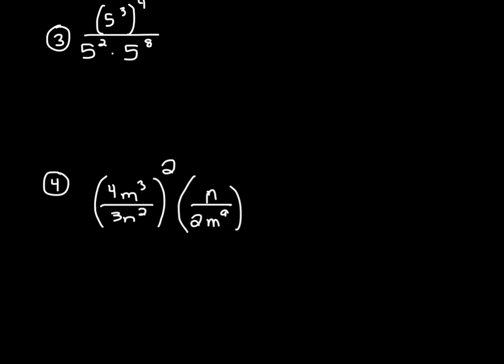In number three, our base is a number instead of a variable, but you treat it the same way. In the numerator, we have a power raised to another power, so we multiply: three times four is twelve, giving a base of 5 raised to the twelfth power. In the denominator, both bases are 5, so we keep the base and add the exponents. To simplify, we're dividing two terms with the same base — keep the base and subtract the exponents: twelve minus ten is two. And 5 squared is just 25.